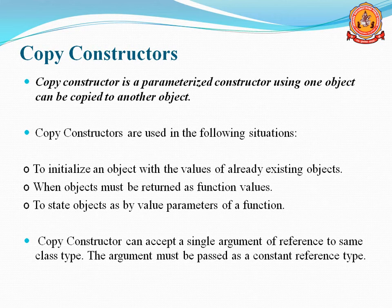Copy Constructors can accept only a single argument of a reference type of the same class. Unlike a Parameterized Constructor where you can take multiple arguments of integer or float type, a Copy Constructor takes only one argument, and that argument should be in pass-by-reference format and should be of object type or class type.